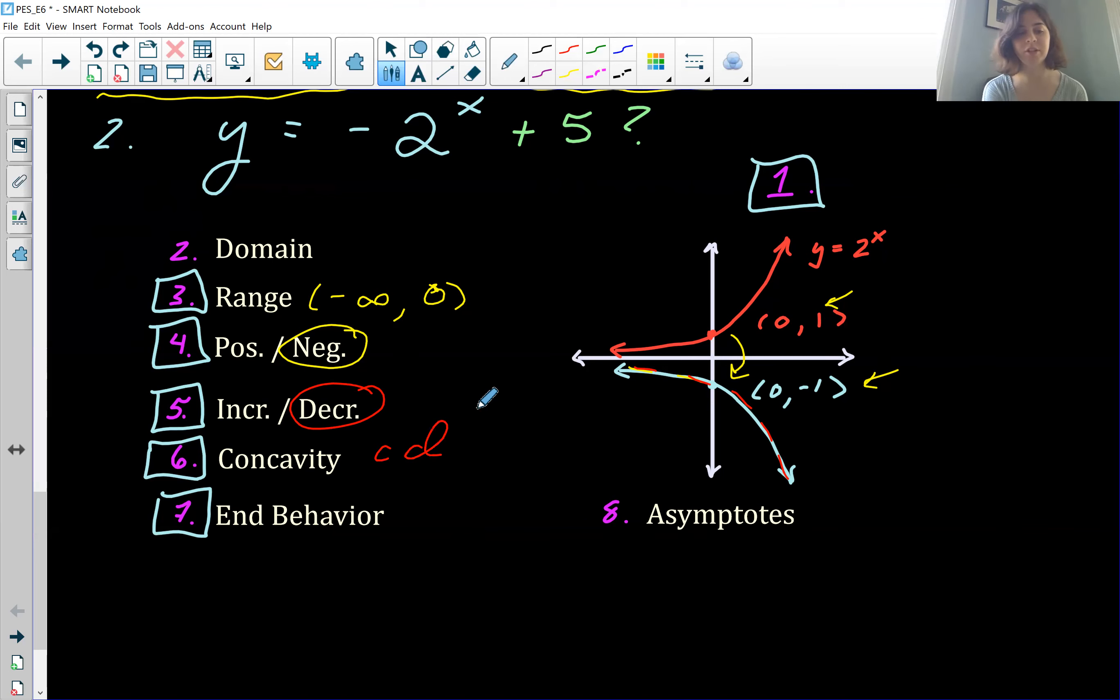End behavior, yep, that's going to change. So if we look at our graph, as x approaches infinity, y is going to approach negative infinity. And then as x approaches negative infinity, we can see that the curve is approaching that zero line. So y is going to approach zero. Asymptotes don't change. Again, it's just going to be that y equals zero.